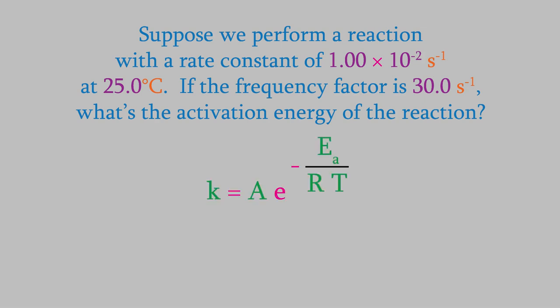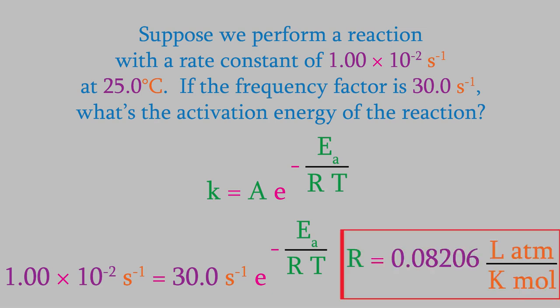We'll use the Arrhenius equation we just talked about. We're looking for the activation energy, so we need to plug in everything else in this equation. And we can do it. We know what k, A, R, and T are. We can use the values for k and A from the question. You might remember that R is the gas law constant, which is 0.08206 liters times atmospheres over kelvins times moles. But actually, that's not what we want to use in our calculation.